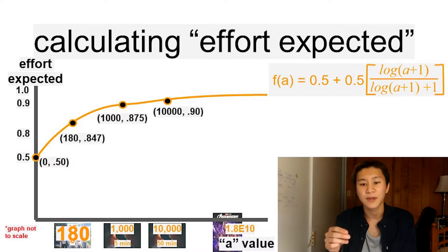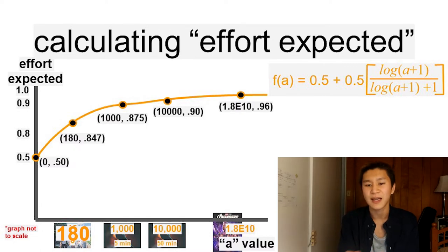At A equals 10,000, expected effort is equal to 90%. And for Avengers Endgame, expected effort is about 96%.